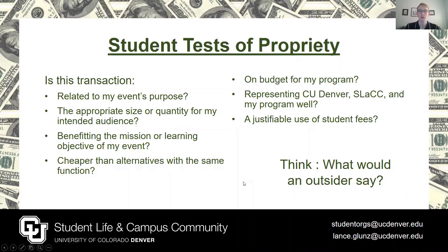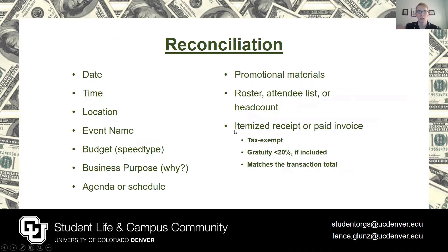Let's dive into those policies for club procurement. CU staff must consider the test of propriety when organizing any fiscal activity for the university. These eight questions identify the transaction's feasibility and business purpose or learning outcome. I have rewritten those test questions here in a club context. If the answer to any question is no, one should expect to revise their planned expenses or have the request denied outright. Fiscal staff must also justify their work via expense reconciliation on the back end. We each assume liability for expenses made until they receive administrator approval and finally post to university accounts.